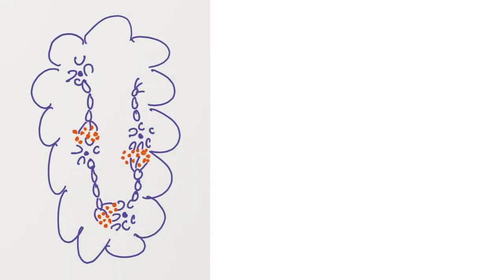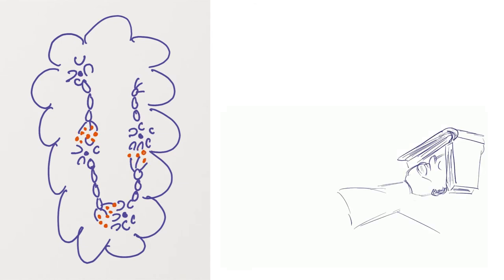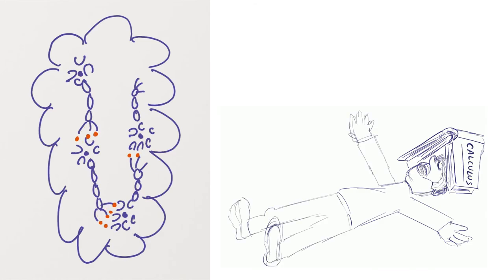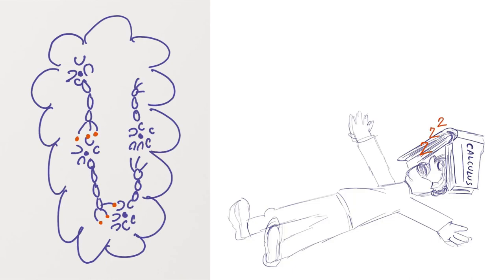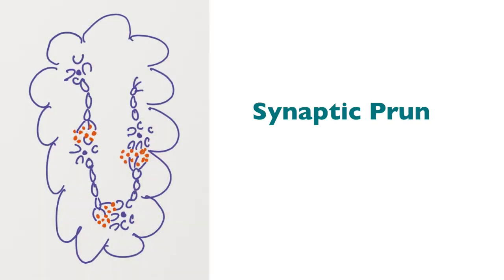When you learn something new, but then you don't practice. Let's say you learned calculus in school, but after your final exams, you never looked at calculus again. Then, in your brain, the synaptic strength of the neural pathway for calculus keeps diminishing. This is called synaptic pruning.